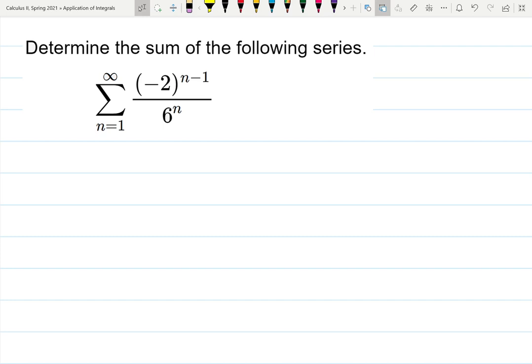One more example with geometric series. Let's see what is happening here. We already know that geometric series has a shape or form of a r to the n, where a is the first term and r is the common ratio. Here I don't see it, so let's try to rewrite it.